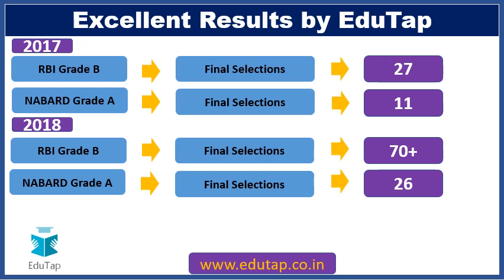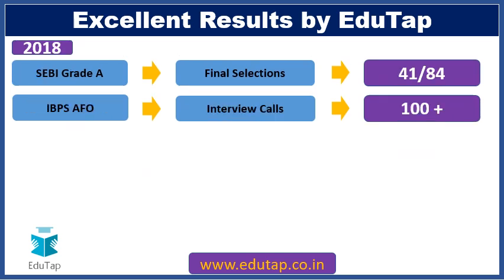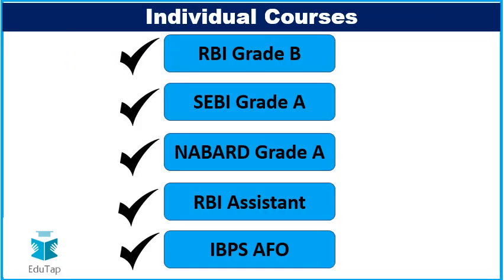Let me quickly tell you about the excellent results we have achieved over the past few years. In 2017, in RBI Grade B we had 27 final selections, and in NABARD Grade A we had 11 final selections. In 2018 we repeated the same success story — RBI Grade B had 70 plus final selections and NABARD Grade A had 26 final selections. Also in 2018, in the SEBI Grade A examination, out of 84 total selections, 41 were our students. In the IBPS AFO examination, our students got 100 plus interview calls. The individual courses we offer include RBI Grade B, SEBI Grade A, NABARD Grade A, RBI Assistant, and IBPS AFO examinations.